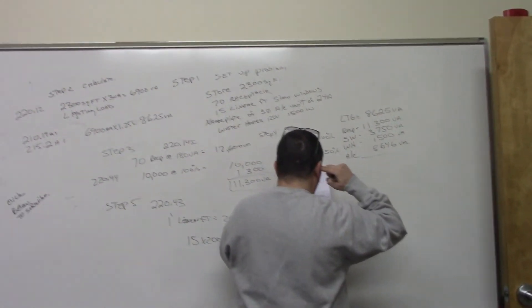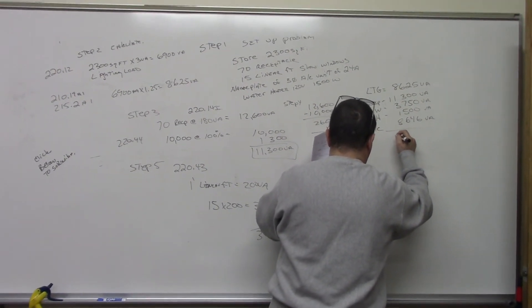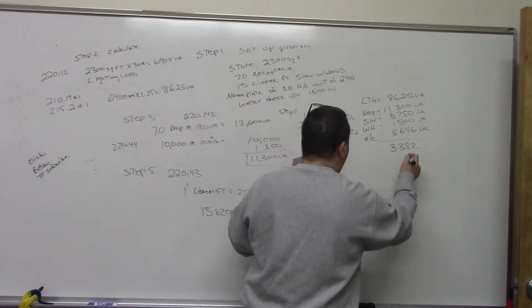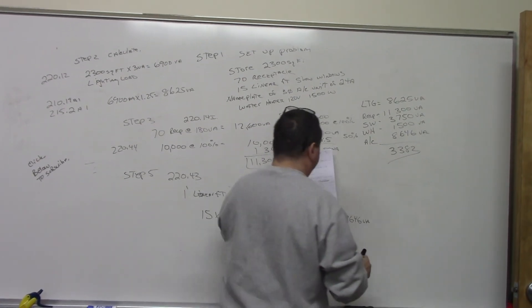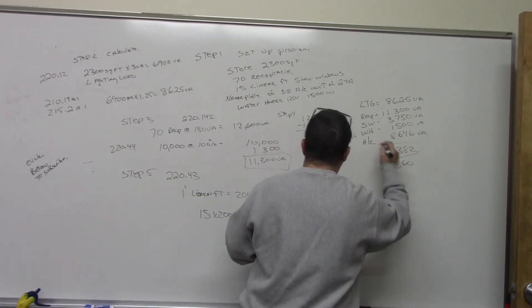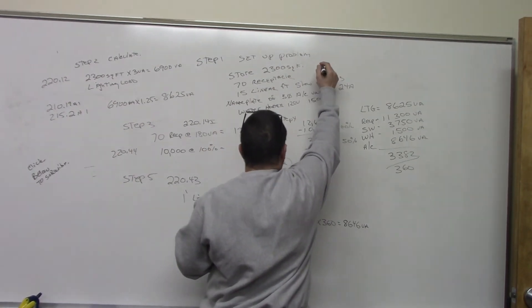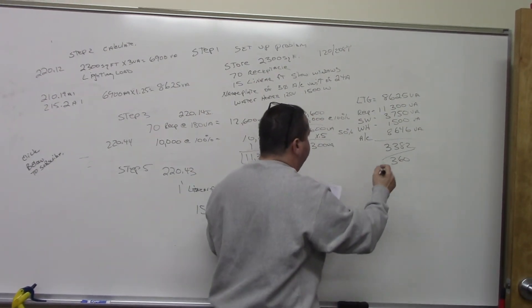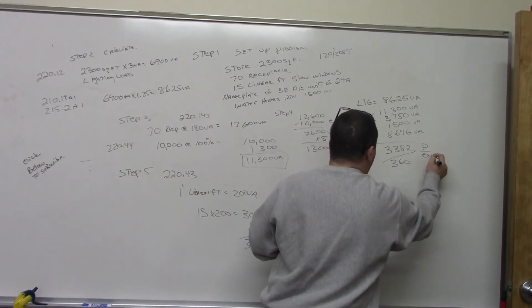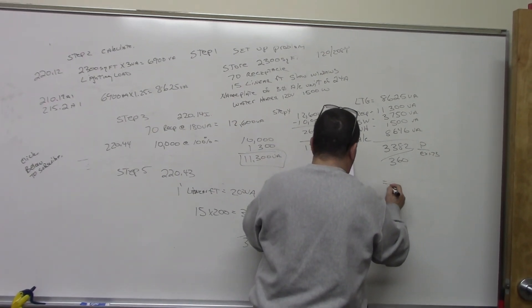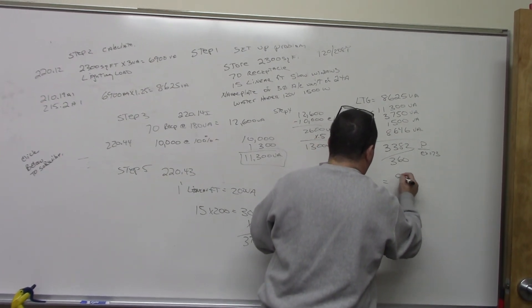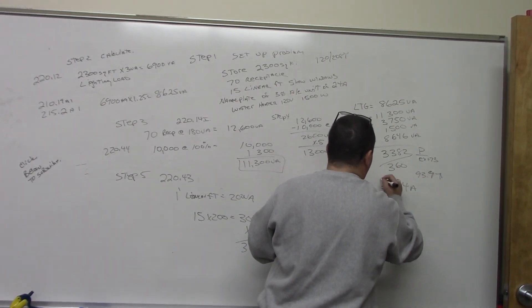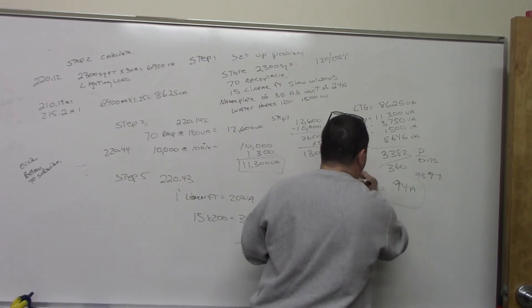We add it all up, and we come out with 33,821, and we divide by 360, again, because it's three phase. The whole store is 120, 208 Y. Three phase. And when we do this, P over E times 1.73, and we come out with 94 amps. I think it's actually 93.9 amps. And we round up, and we come out I equals 94 amps.